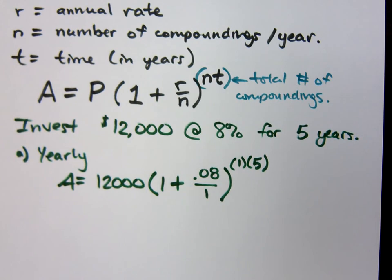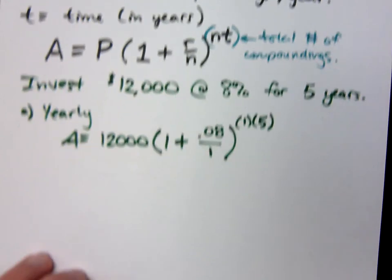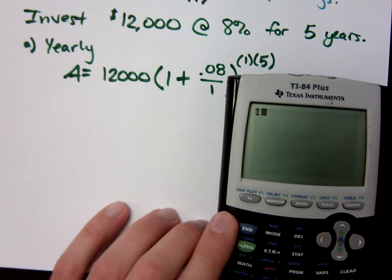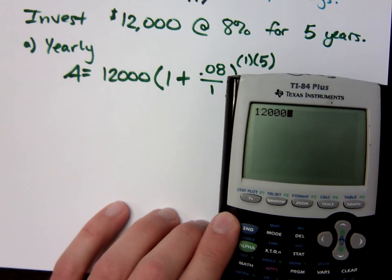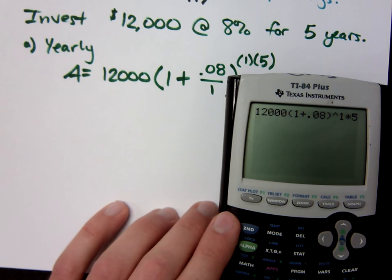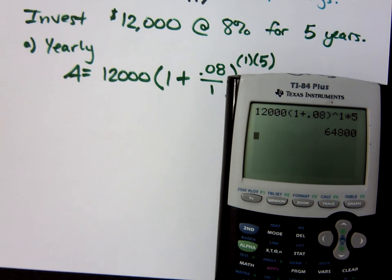So let's check this out. We better end up with more than $12,000, right? Or the bank is robbing us. I have 12,000 times 1 plus .08. I don't need to say divided by 1. Raised to the what power? If you do 1 times 5, you're going to have issues here. It's raised to the first power times 5, which is just itself, then you multiply the whole thing times 5. Look at the ridiculous answer you get. I have $65,000! Come on. What's wrong with that?